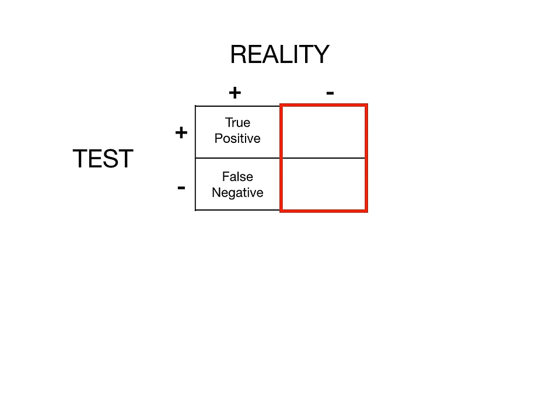Now let's focus on the other boxes. If in reality you don't have cancer, but you get a test that says you do have cancer, that is an example of a false positive. And going down to the last box in our 4x4 table: if in reality you do not have cancer and you get a test that says you're negative, you do not have cancer — that's an example of a true negative.